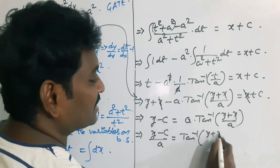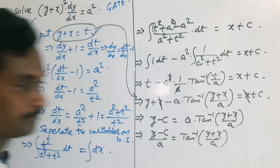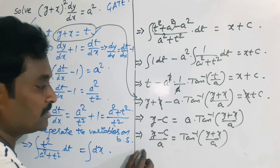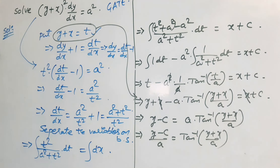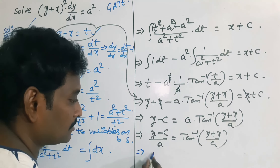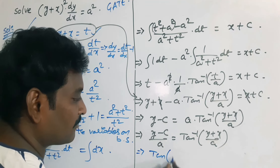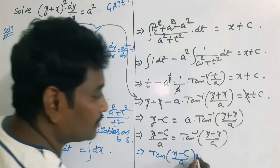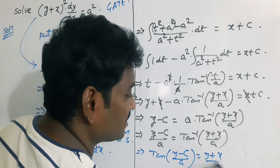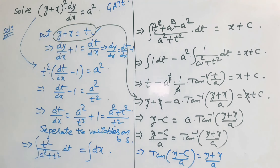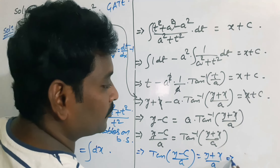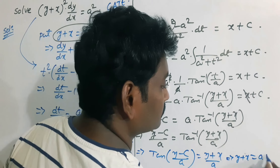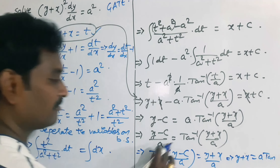Dividing both sides by a: (y − c)/a = tan⁻¹((y + x)/a). Applying tan to both sides and multiplying by a, the final result is: y + x = a · tan((y − c)/a).